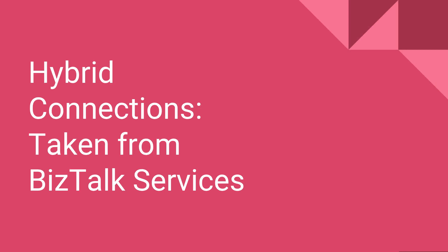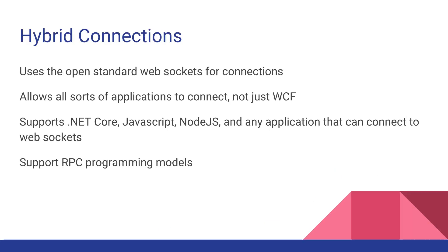There's a second type of Relay Service called the Hybrid Connection. This was basically borrowed from BizTalk services. In a previous version of this course we've talked about BizTalk services being different than the Relay service, but now BizTalk services has been folded into the Relay service and is called Hybrid Connection. This uses standard WebSockets for connections, allowing all sorts of applications to connect — because it uses WebSockets, an industry standard framework, you can use .NET Core, JavaScript, Node.js, or basically any application that can communicate over WebSockets. It also supports traditional remote procedure call RPC programming models, where you make a call asynchronously and then the return result calls back. That programming model is supported using Hybrid Connections, but not using the WCF service.